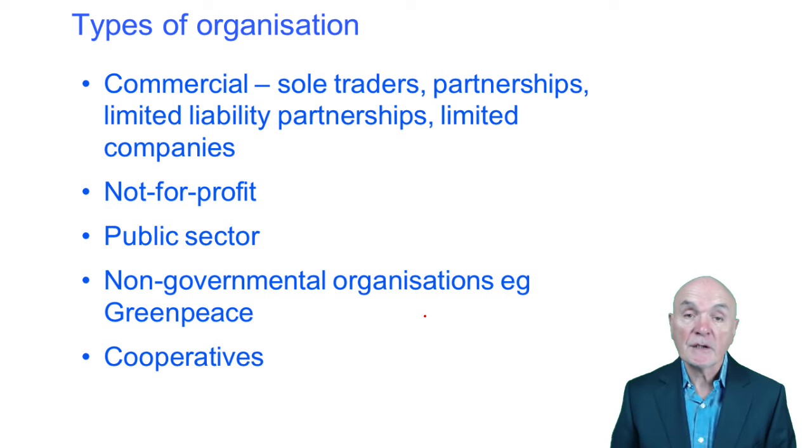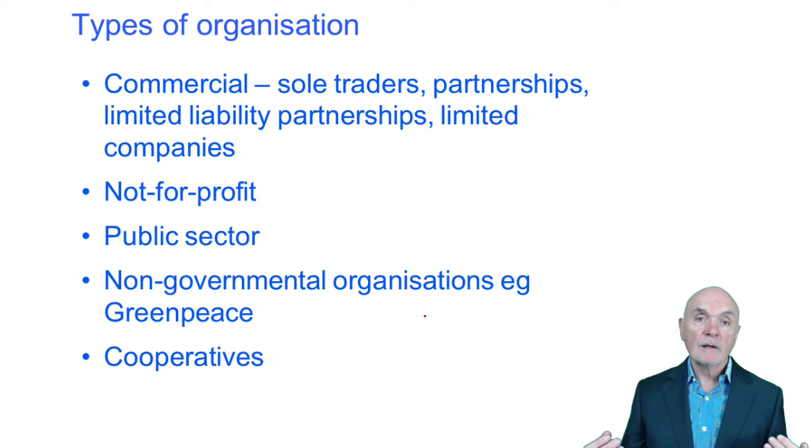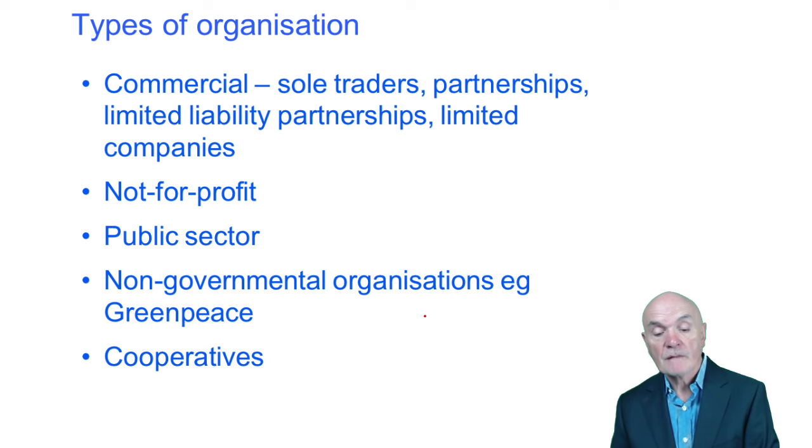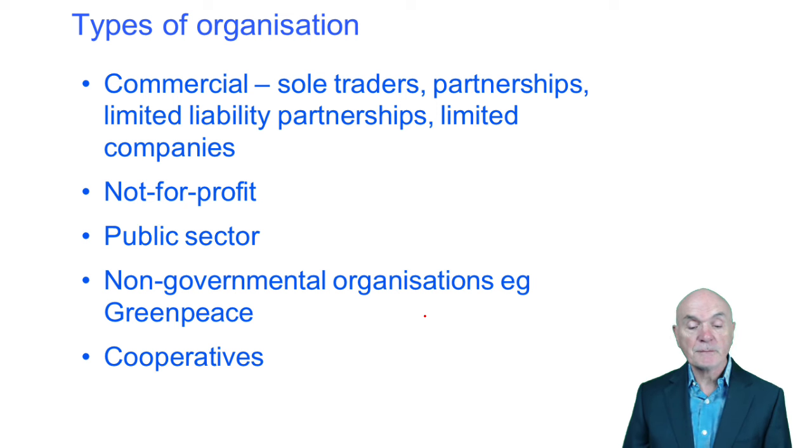Types of organisation. You can have commercial. They could be sole traders, a person starting on their own. Partnerships, where several people work together with a view to profit. Limited liability partnerships, limited companies. Great thing about limited liabilities partnerships and limited companies is if the company goes bust, then the creditors of the company cannot come after the shareholders for personal assets. So the liability of shareholders is limited. And in limited liability partnerships, the liability of the partnership is limited.